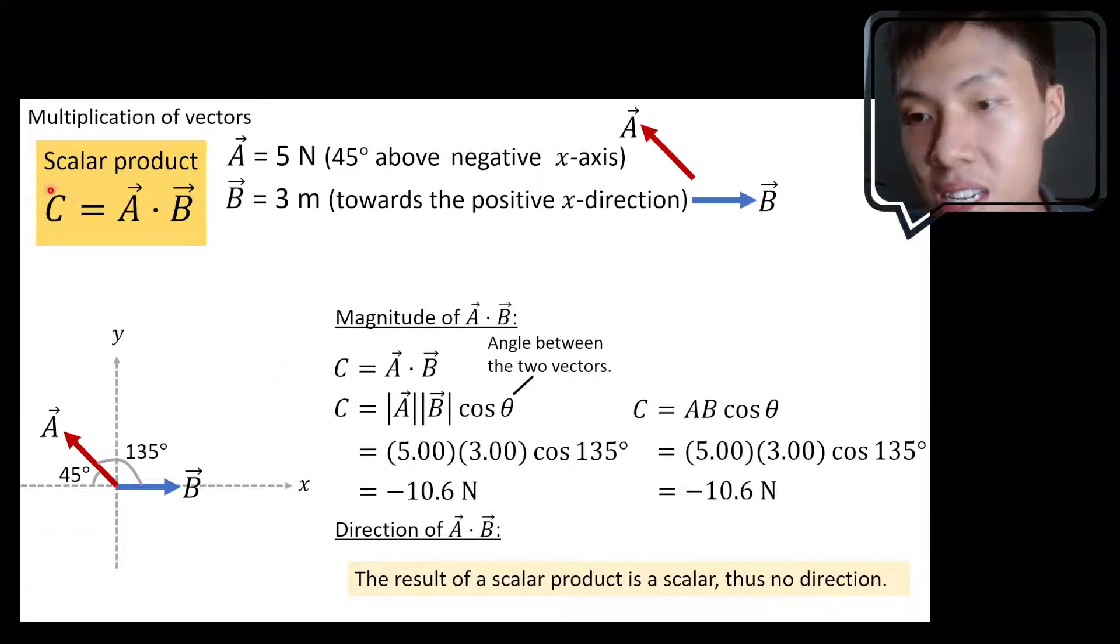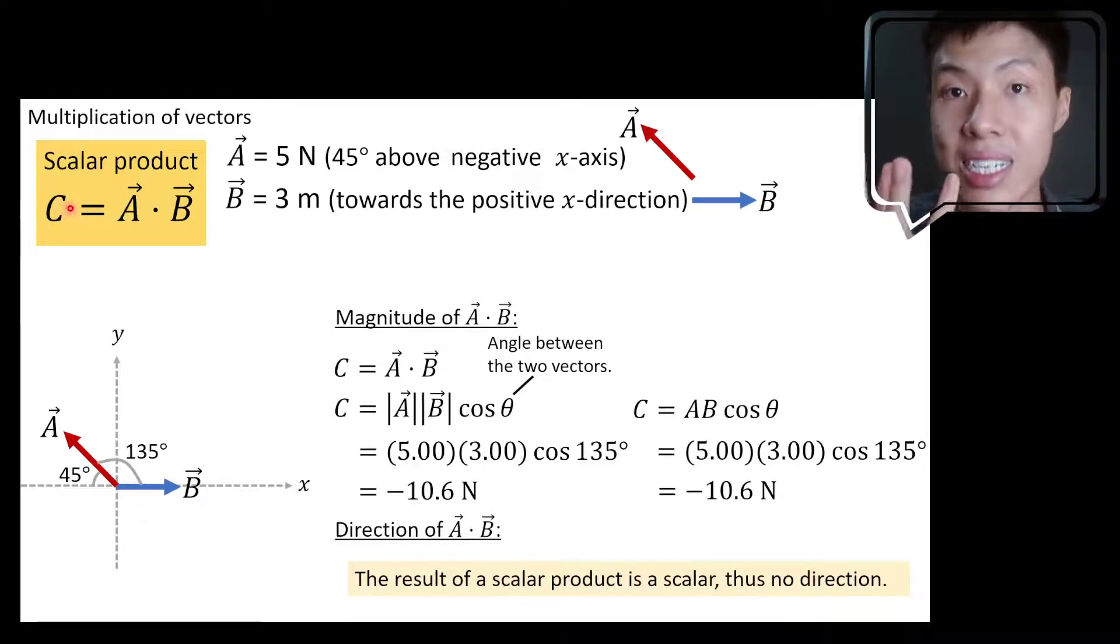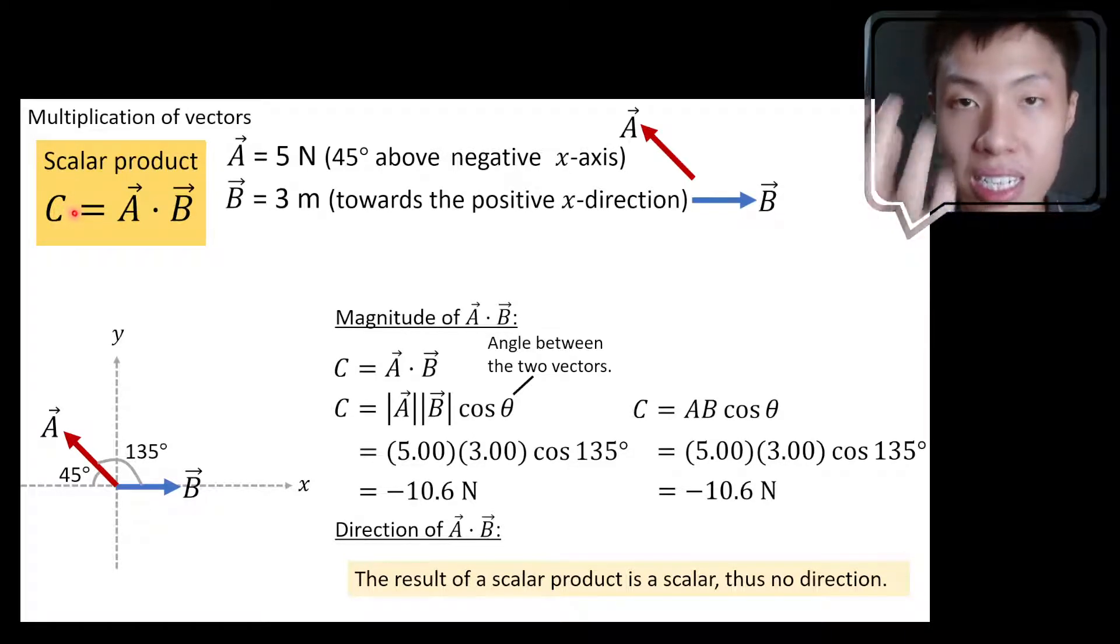So since this C here, which is the result of the scalar product, it's a scalar, and since it's a scalar quantity, it only has magnitude, it has no direction.